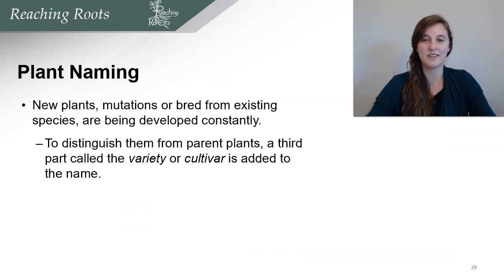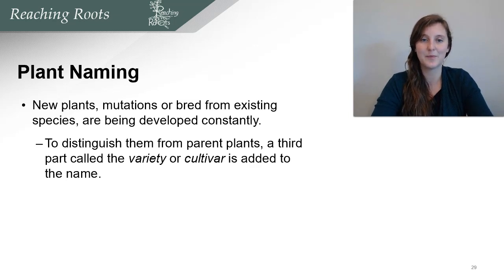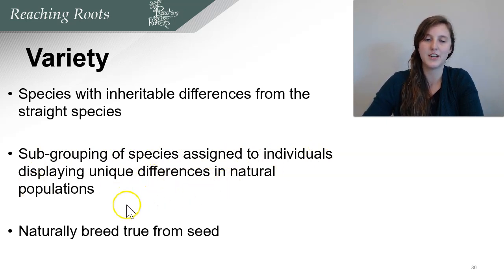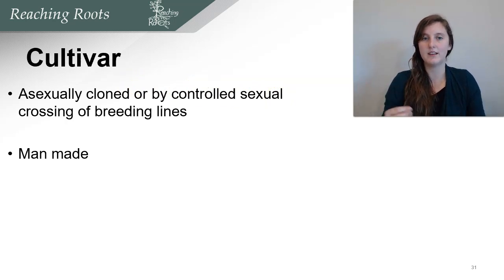In addition to genus and species, sometimes it's necessary to add a cultivar or variety because new plants and mutations happen all the time in nature. Plant breeders also work to make specific plants have a specific characteristic such as taste or coloring. To distinguish these plants from the parent plant, a third part of the name is added: variety or cultivar. A variety is a species with inheritable differences from the straight species — a subgrouping assigned to individuals displaying unique differences in the natural population. These are naturally bred from true seed, meaning if you plant the seed, you'll have the same variety. A cultivar, on the other hand, is asexually cloned or controlled sexually cross-bred — these are man-made. To continue growing a cultivar, you would propagate it asexually rather than by seed.